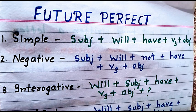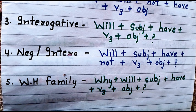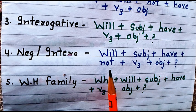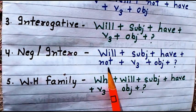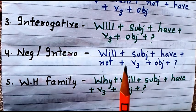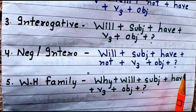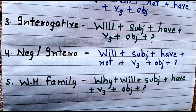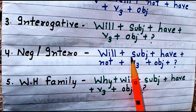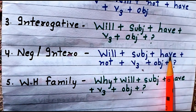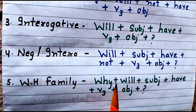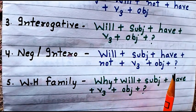The fourth type is negative interrogative, which carries both a negative sense and an interrogative sense. The structure is: Will + subject + have + not + third form of verb + object + question mark. So don't get confused — the same elements apply, but we break the 'have + third form' combination and place 'not' in the center between 'have' and the third form of the verb.